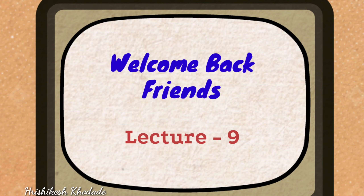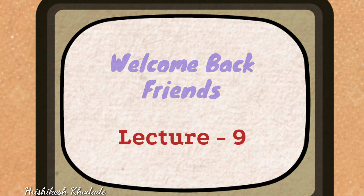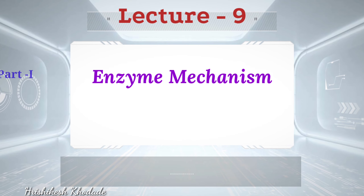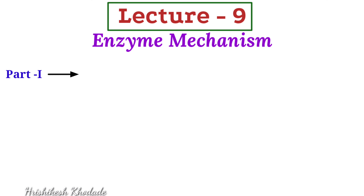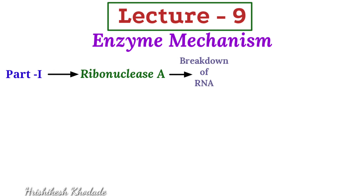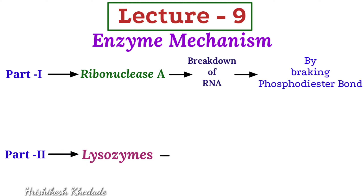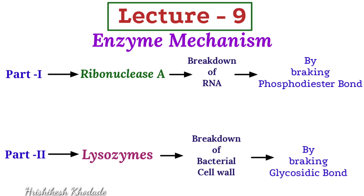Welcome back friends. In our ninth lecture of enzyme mechanism, in part one we studied about ribonuclease, which is famous for breakdown of RNA by breaking phosphodiester bonds. In part two, we are going to study another example: lysozymes, which are famous for breakdown of bacterial cell wall by breaking glycosidic bonds.